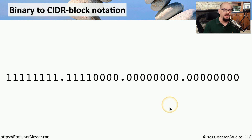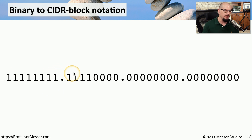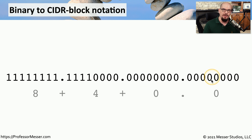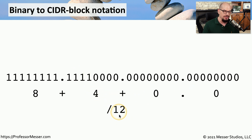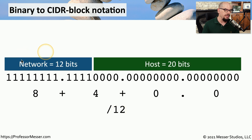Let's do one more CIDR block notation calculation. In this subnet mask, we have all 1s in the first octet, then 1, 1, 1, 1, 1, 0, 0, 0 in the second octet, and the third and fourth octets are all 0s. Counting up the number of 1s, we have 8 in the first octet and 4 in the second, which means this subnet mask is a slash 12. The network portion is 12 bits in length, and the remaining bits are the host bits — in this case, that would be 20 bits.